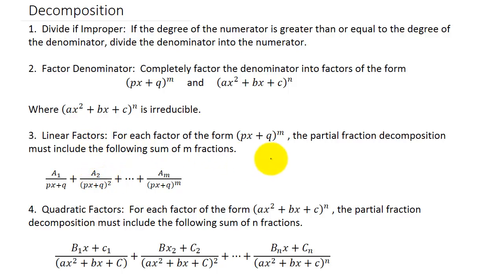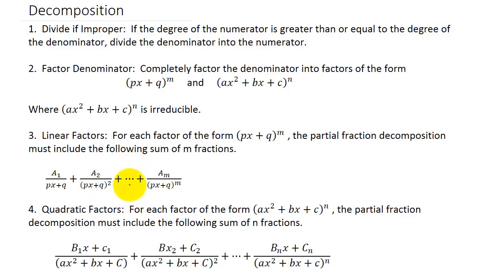Your linear factors would be (px + q) to the n, where the largest exponent is one, and your quadratic factors have exponent two. This tells you how to write out the decomposition: whatever the exponent is, you write that many terms — A₁/(px+q)¹ + A₂/(px+q)² + A₃/(px+q)³, and so on up to the m-th power. The same applies for quadratic factors, except the numerator would be B₁x + C₁, and so on up to n.